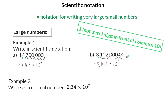In example 2, we are given the exponential notation and asked to write the value as a normal number or expanded notation. To do this, we are going to focus on the 10 to the power of 7. As mentioned previously, every time you multiply by 10, the comma moves one space to the right to make the value 10 times bigger. So here the comma needs to move 7 spaces to the right. Starting with 2,34, I've already moved the comma 1, 2 spaces and it needs to be moved 5 more spaces. Each one of these 5 spaces will result in another 0. This means that my final answer is 23,400,000.